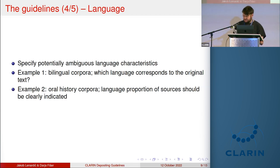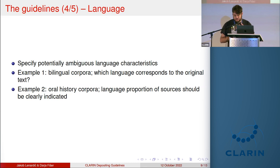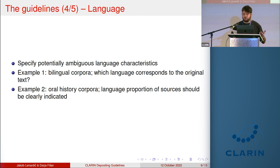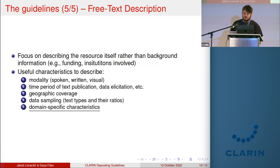For instance, if a bilingual corpus contains Slovenian-English texts, it should be specified which language corresponds to the original versus the translated texts — or both if applicable, as holds for oral history corpora. The proportion of sources in the deposited corpora with respect to their languages should also be clearly indicated, including things like the language of the actual texts and the meta-language of annotated comments.